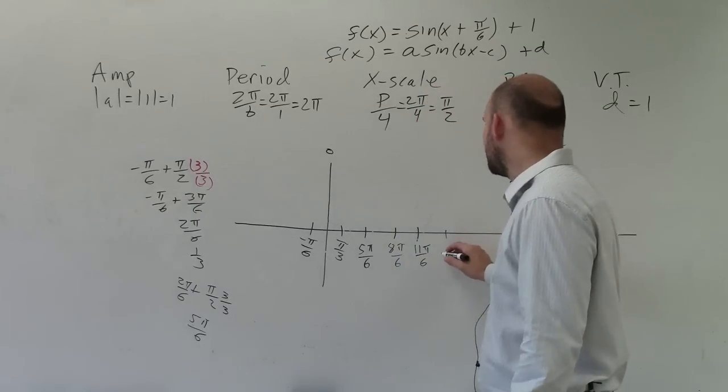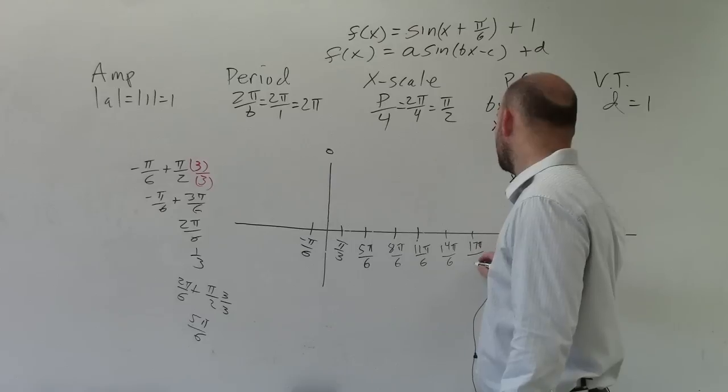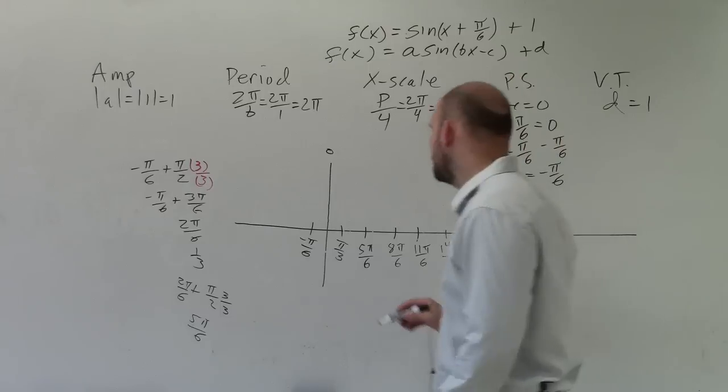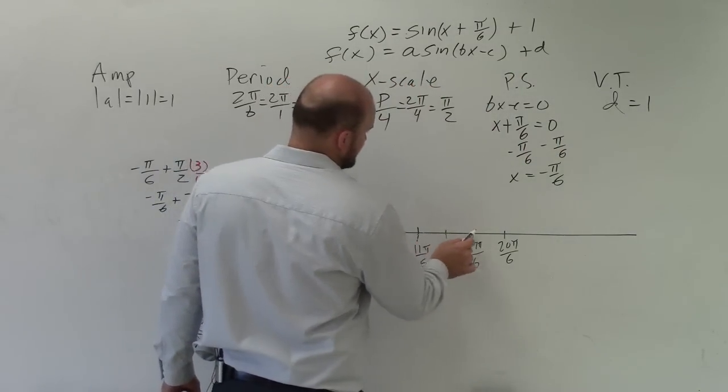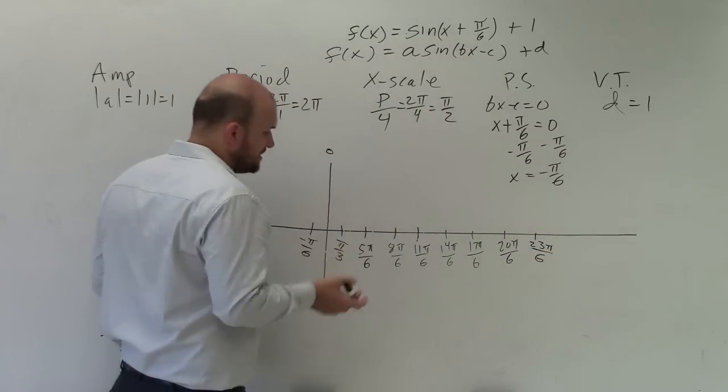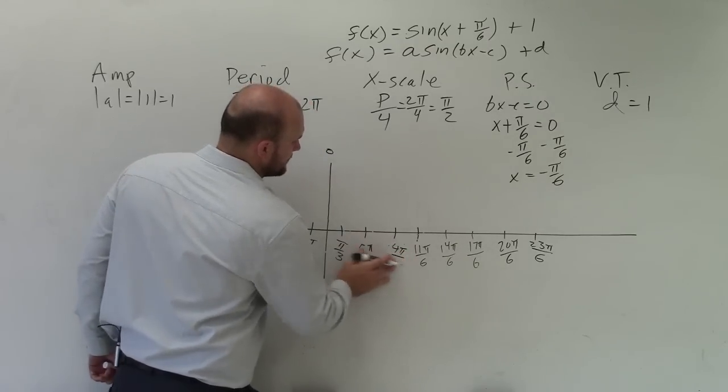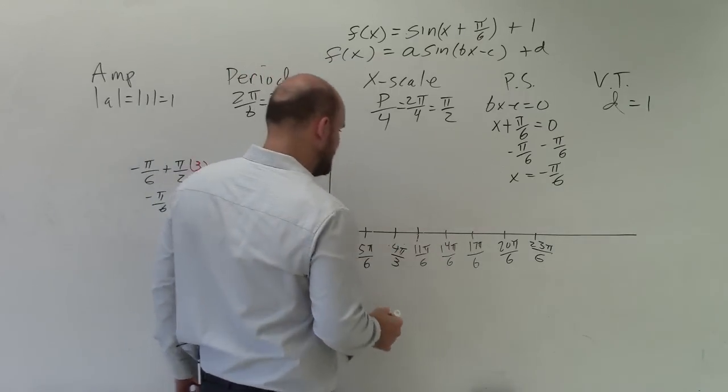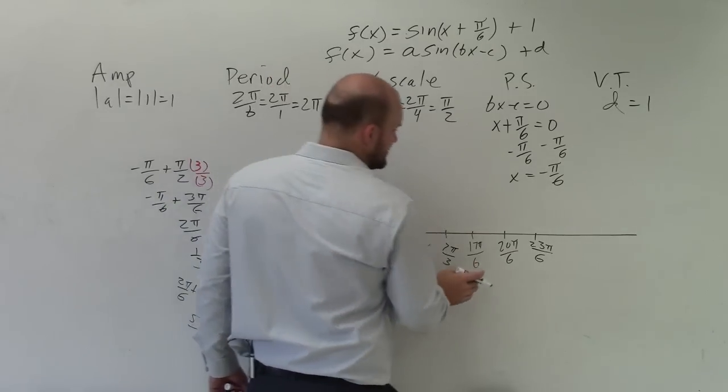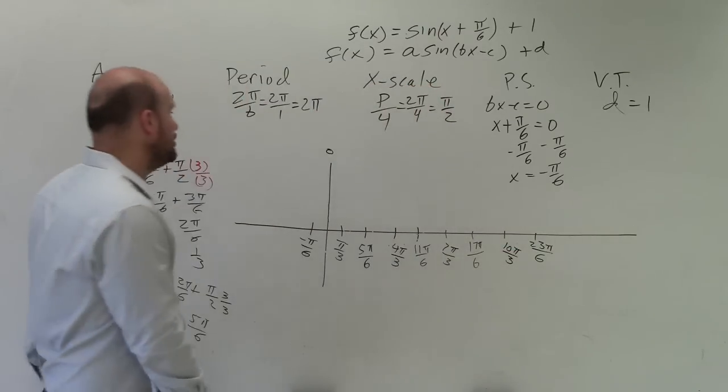The next one is going to be 8 pi over 6. If you kind of just follow the pattern, this is 2 pi over 6, 5 pi over 6, 8 pi over 6. And this would be 11 pi over 6. And then let's do two periods. So the next one is going to be 14 pi over 6, 17 pi over 6, 20 pi over 6. So let's see. I have 1, 2, 3, 4, 1, 2, 3. And then we do one more, 23 pi over 6. Now, obviously, some of these can reduce. This can reduce down to 4 pi over 3. This can be reduced down to 7 thirds. This can be reduced down to 10 thirds. So you can go ahead and reduce those.